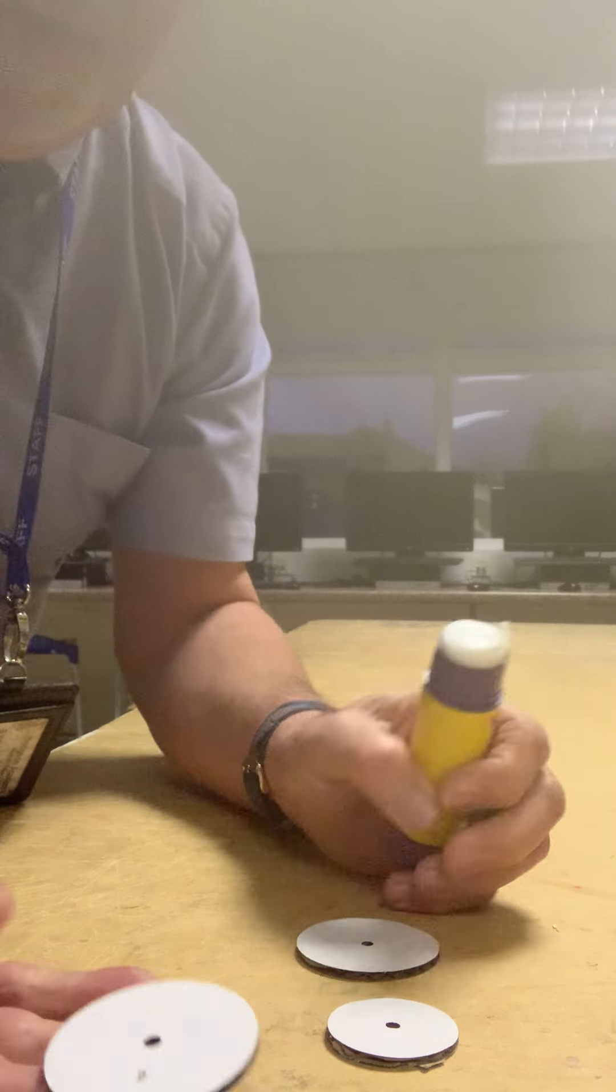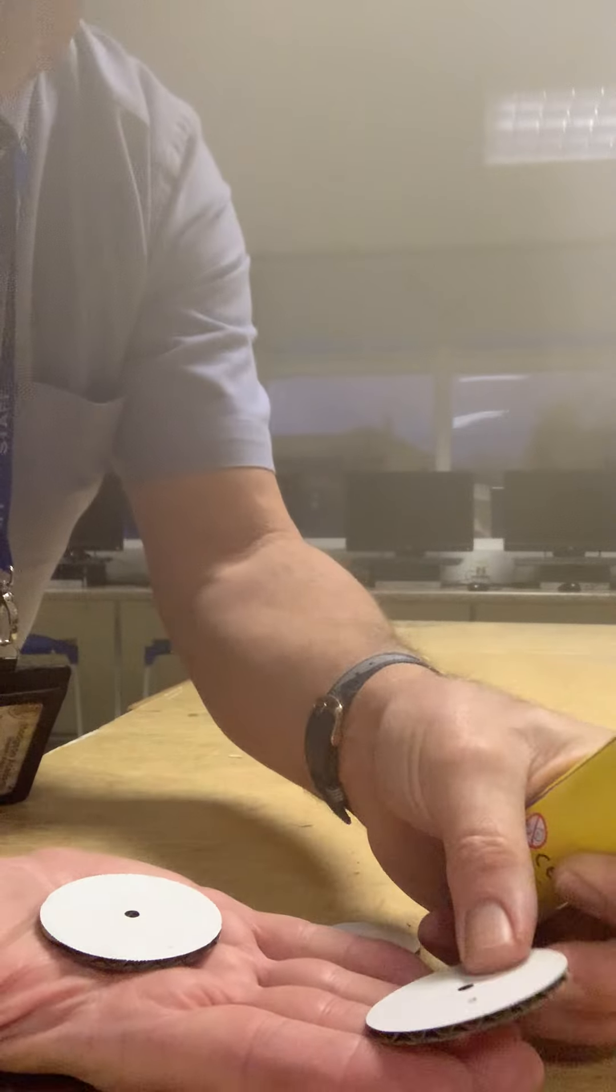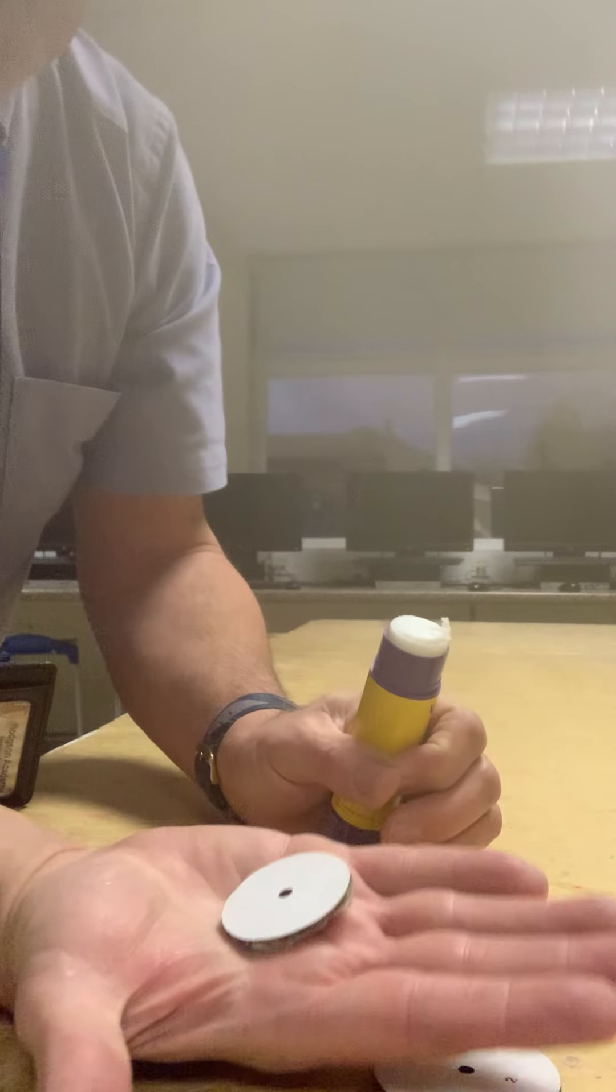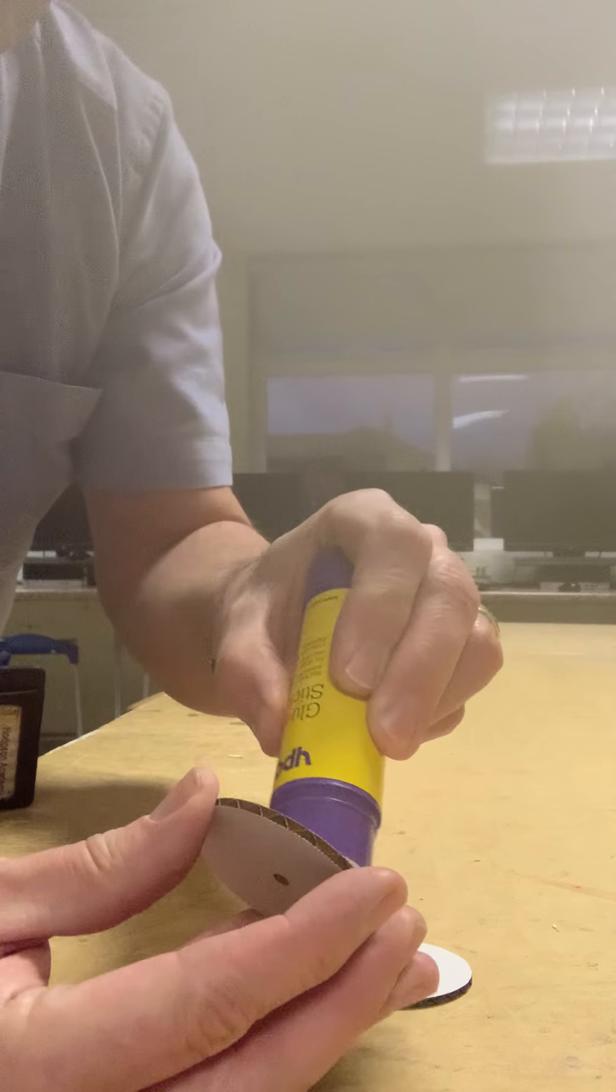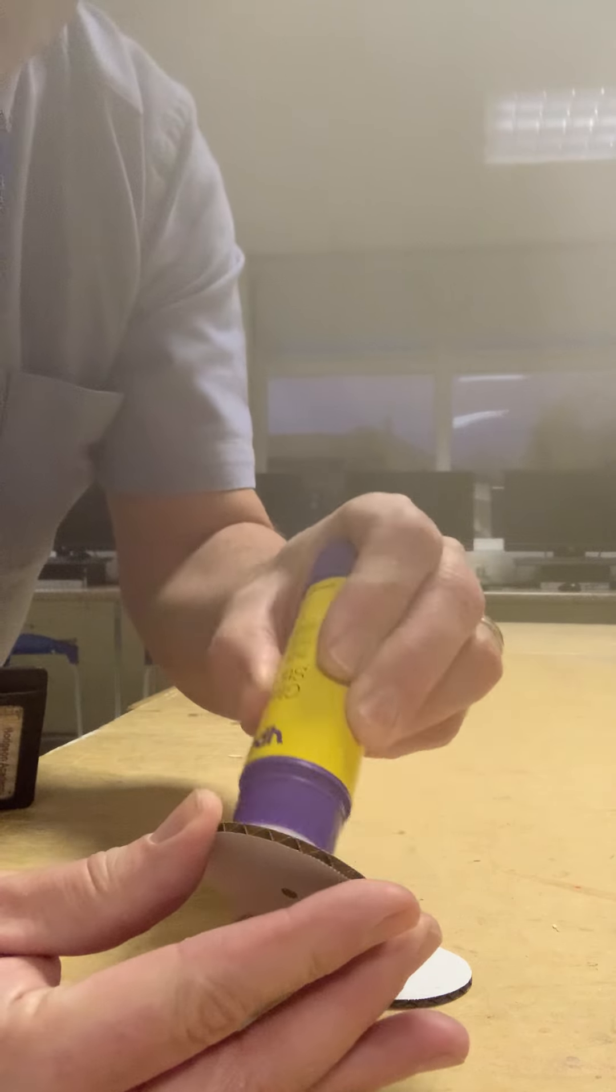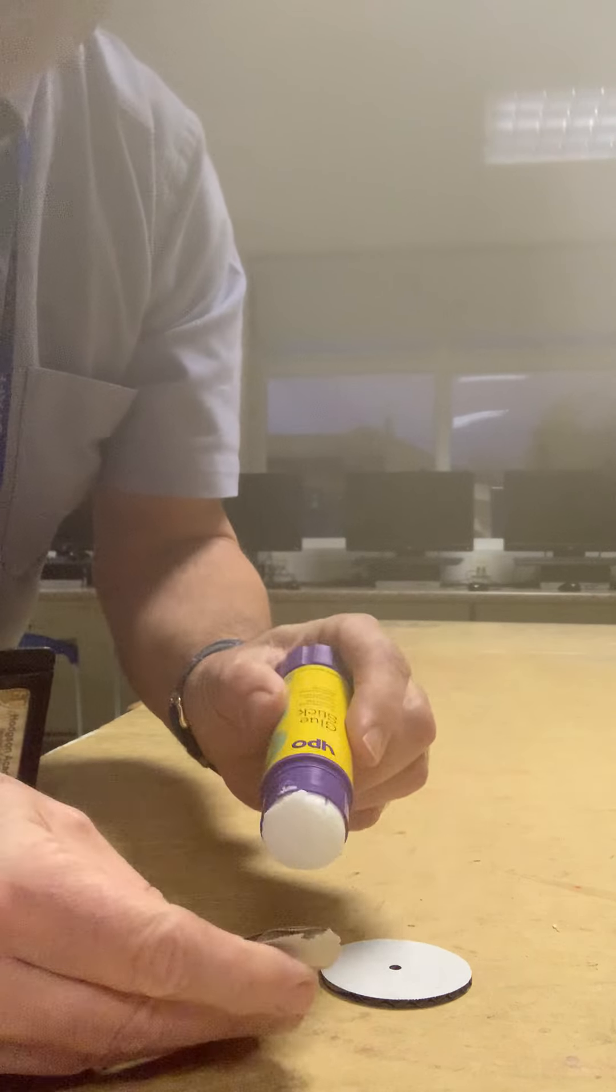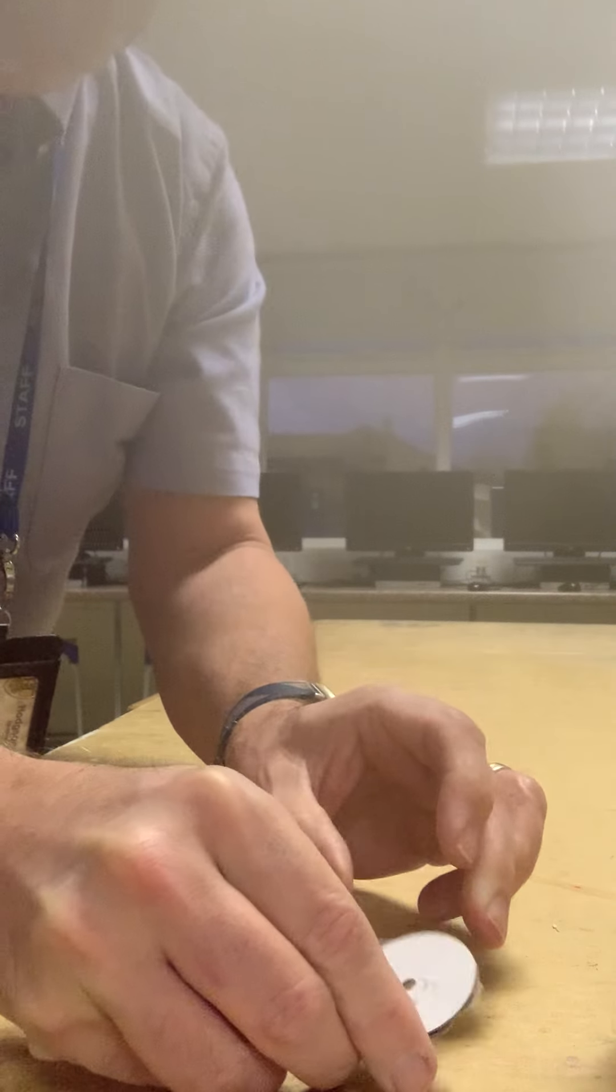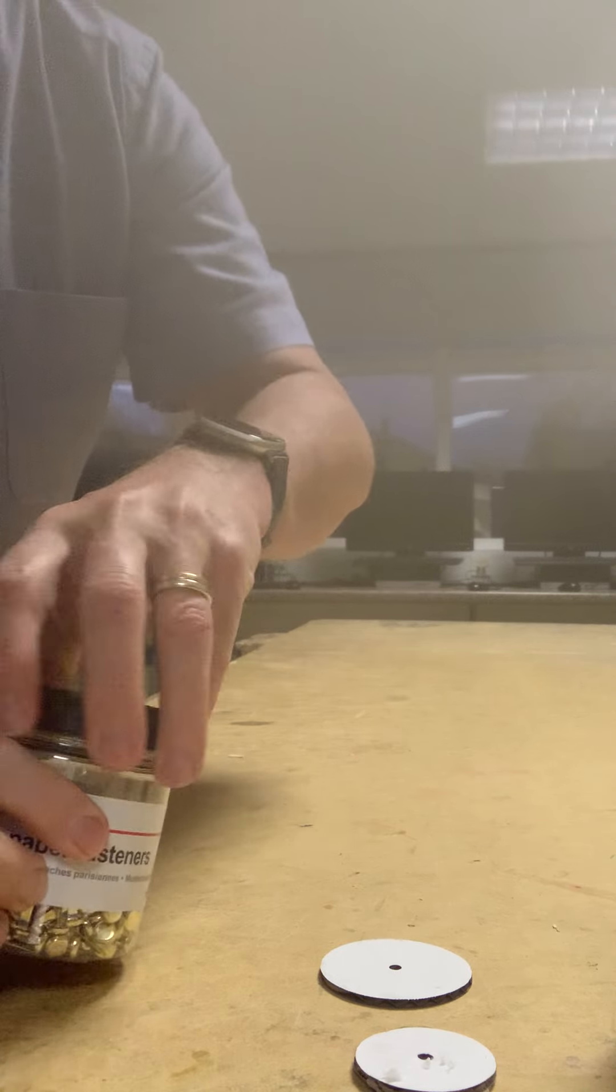So we've got the glue stick and we've got three pulley wheels - two the same size and one slightly smaller. And all I'm going to do here is put some glue on one of the faces and then put some glue on the smaller face. So I've glued up the small face and a larger face.